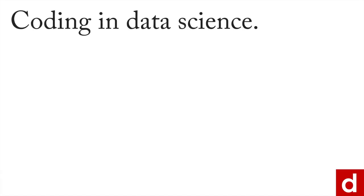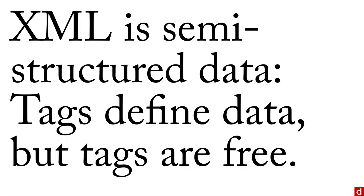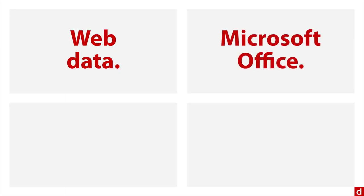The next step in coding and data science when you're working with web data is to understand a little bit about XML. I like to think of this as the part of web data that follows the imperative: data define thyself. XML stands for extensible markup language, and XML is semi-structured data.